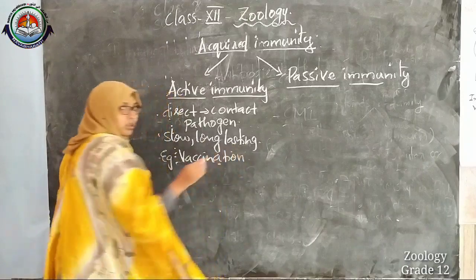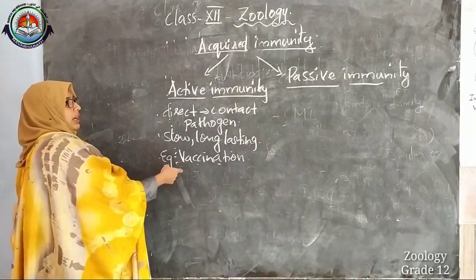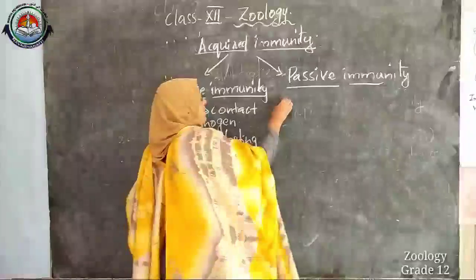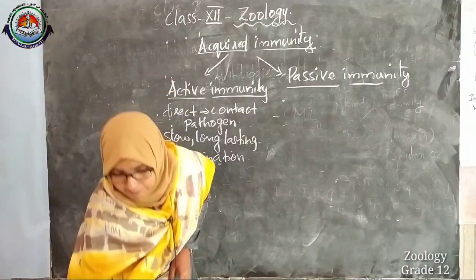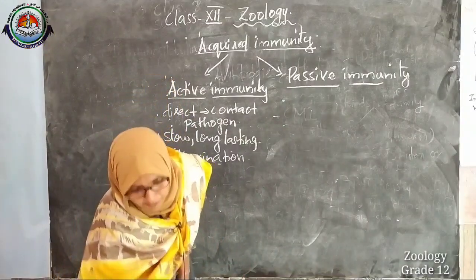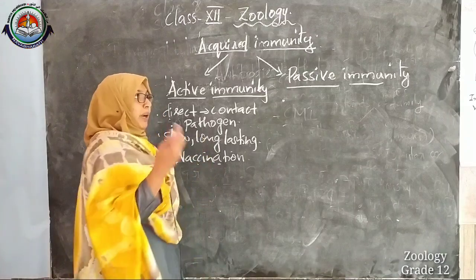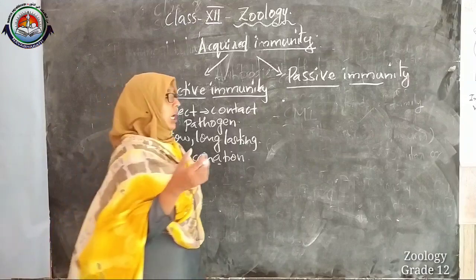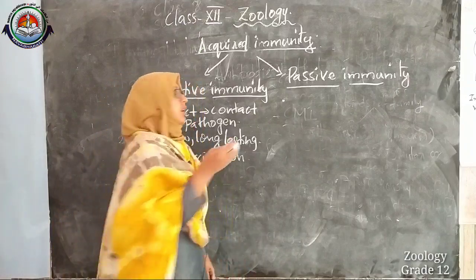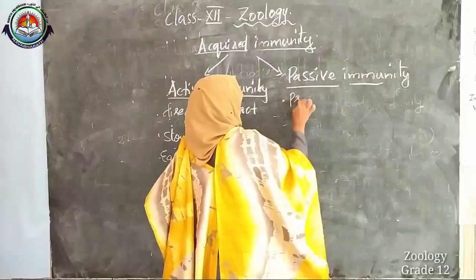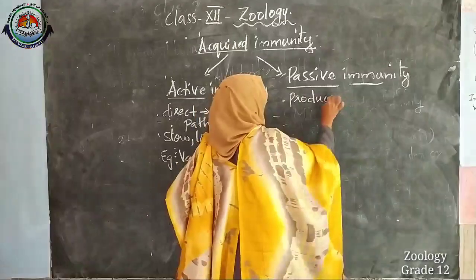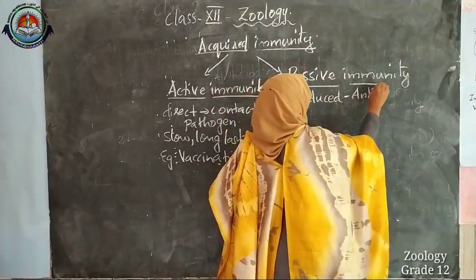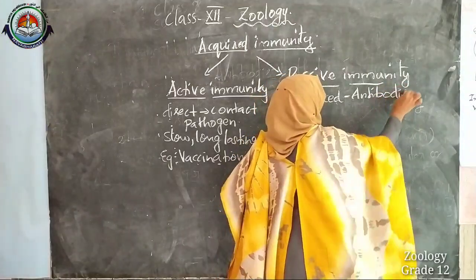An example of active immunity is vaccination — they involve direct contact with the pathogen. Passive immunity is when ready-made antibodies are injected into the body. When ready-made antibodies are deliberately injected into the body of an organism, it constitutes passive immunity.